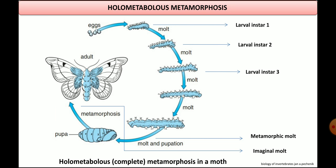Here in this picture we can see the life cycle of a holometabolous insect. Firstly, from a fertilized egg, a larva is formed — the first instar larva — after which successive molting produces the second instar larva and so on, until there is a metamorphic molt which produces the pupa. Later on, the pupa transforms into an adult by undergoing an imaginal molt.